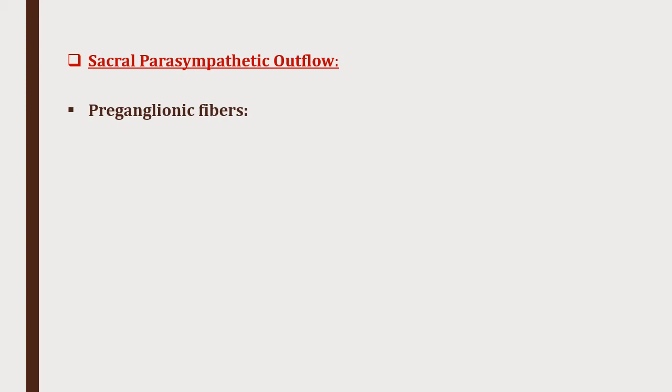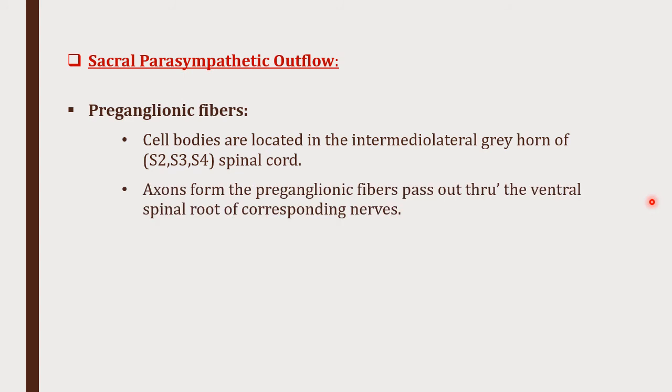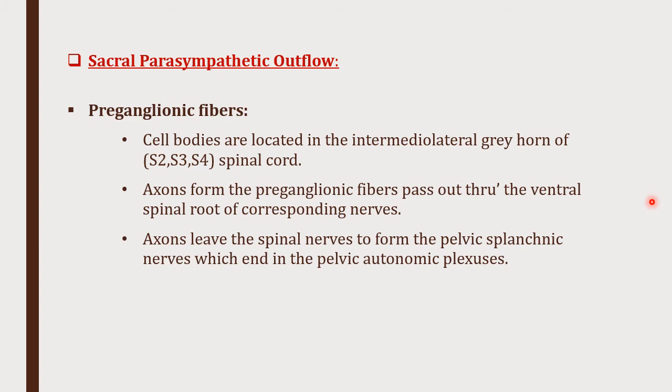That covers the cranial outflow, in which preganglionic fibers pass through the third, seventh, ninth, and tenth cranial nerves. Now for the sacral parasympathetic outflow: preganglionic fibers arise from cell bodies in the sacral segment of the spinal cord, mainly S2 and S3, but sometimes also S4. The axons form preganglionic fibers that pass through the ventral spinal root of the corresponding nerve, leave the spinal cord to form the pelvic splanchnic nerves, and end in the pelvic autonomic plexuses.